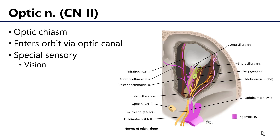Let's start with one of the more obvious features, the optic nerve, or cranial nerve 2. The optic nerve originates at the optic chiasm and it enters the orbit through the optic canal of the sphenoid bone. The optic nerve is conducting back special sensory vision from the retina back to the brain.